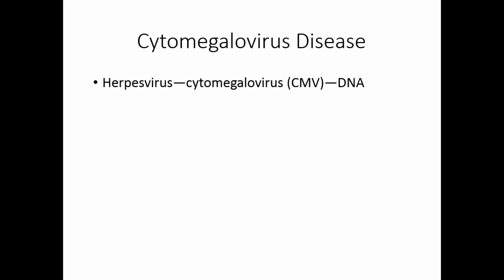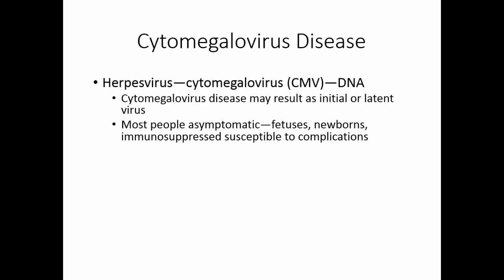Cytomegalovirus is another herpes virus — another DNA-containing virus. Cytomegalovirus disease can result either from initial contact with the virus or as a latent virus. Since this is a DNA virus, it demonstrates latency; people may pick up the virus and show no symptoms, but the disease may show up later. Most people who get cytomegalovirus are asymptomatic. However, fetuses, newborns, and the immunosuppressed are susceptible to complications including enlarged liver, spleen, and jaundice.